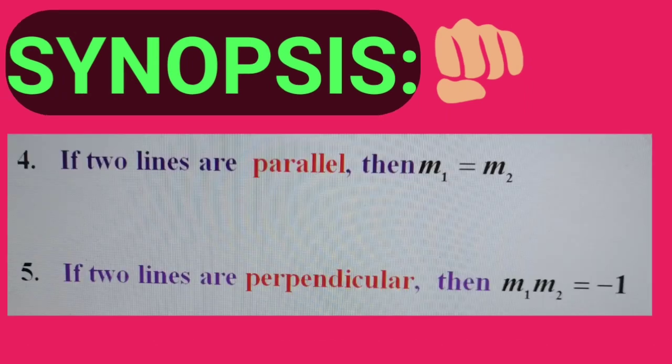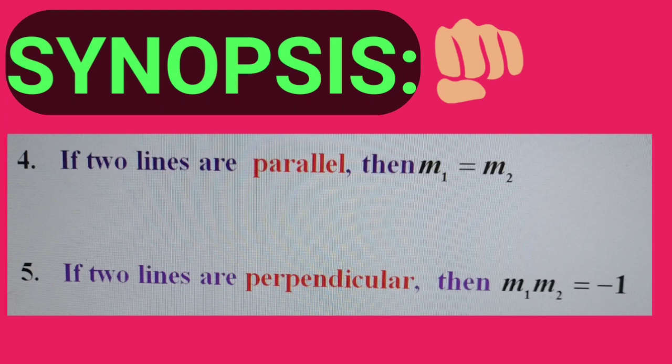If two lines are parallel, then m1 equals m2. If two lines are perpendicular, then m1 times m2 equals minus 1. The slope of the line passing through A(x1, y1) and B(x2, y2) is m equals (y2 minus y1) divided by (x2 minus x1).